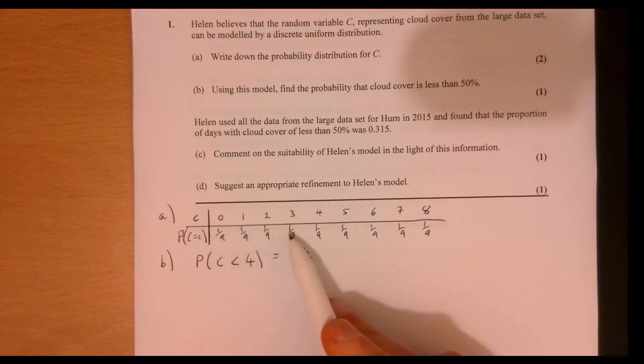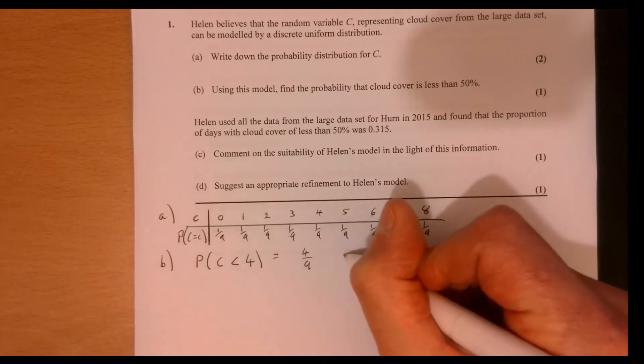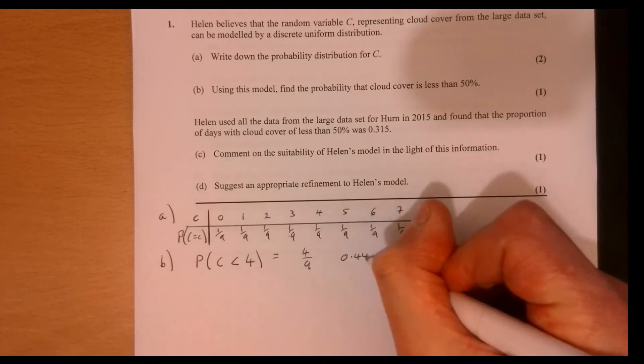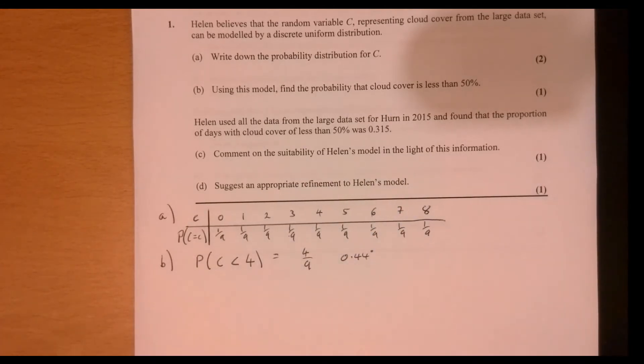0, 1, 2, 3, 4 - it's these values out of the whole thing. If you wish to give that as a decimal, well, it's 0.4 recurring. Right, part C.